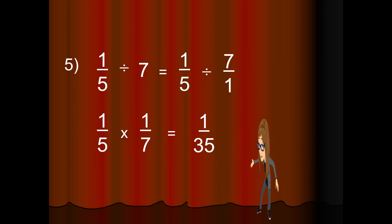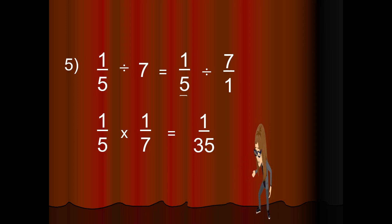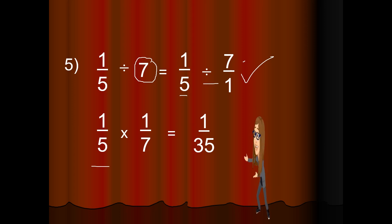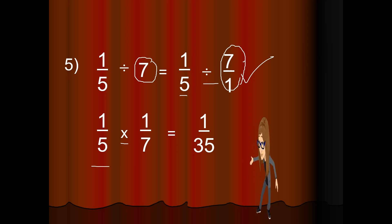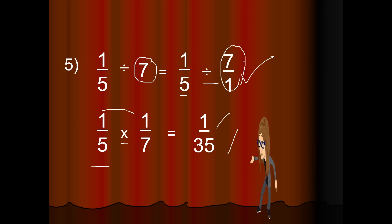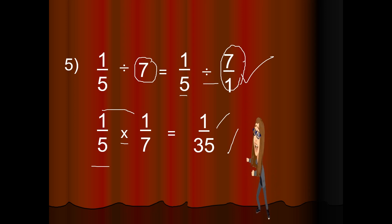Next, we have 1 fifth divided by 7. You keep 1 fifth and rename 7 as 7 over 1. Change the sign of division to multiplication, get the reciprocal of 7 over 1 which is 1 over 7. Proceed to multiplication: 1 times 1 is 1, and 5 times 7 is 35. The answer is 1 over 35. Correct. Very good.